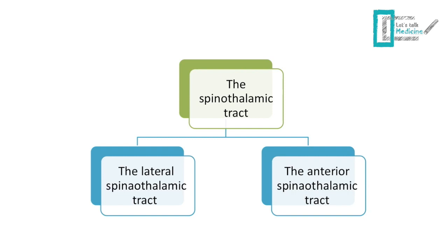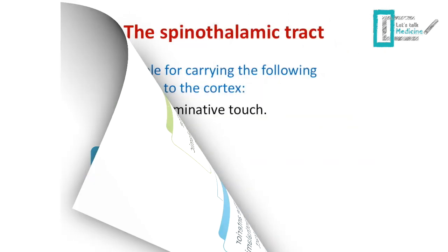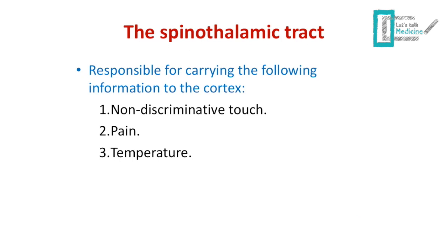This is the second part of the series so you have to watch the first part before you watch this one. The spinothalamic tract is divided into the lateral spinothalamic tract and the anterior spinothalamic tract depending on which part of the spinal cord they run in. In general, the spinothalamic tract is responsible for carrying the following information to the cortex: non-discriminative touch, pain, temperature, and pressure.